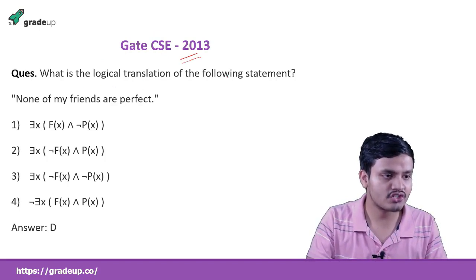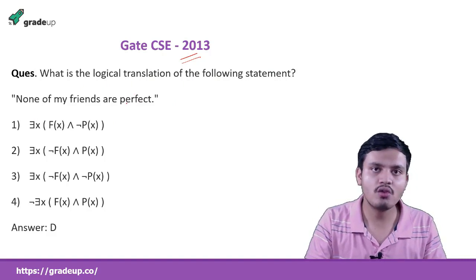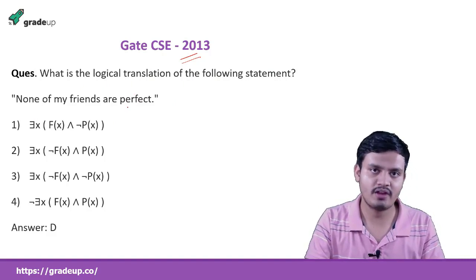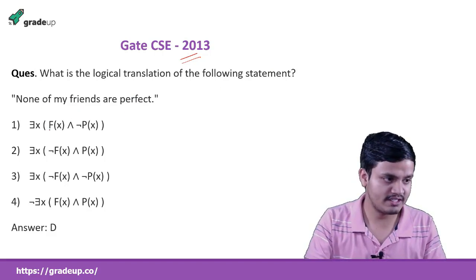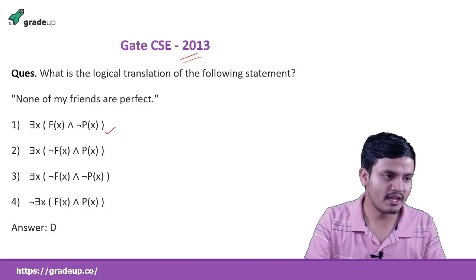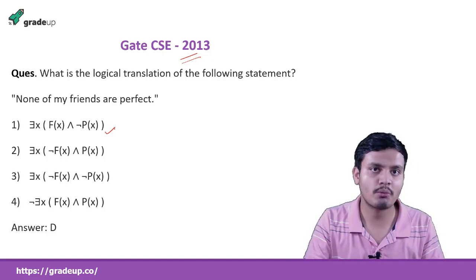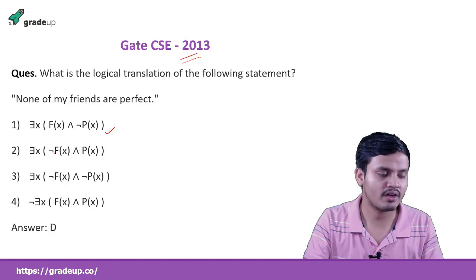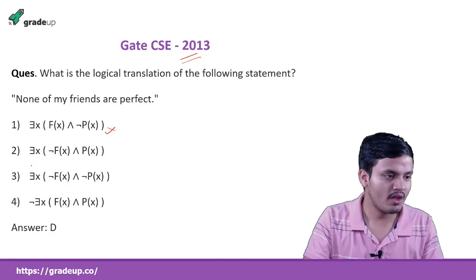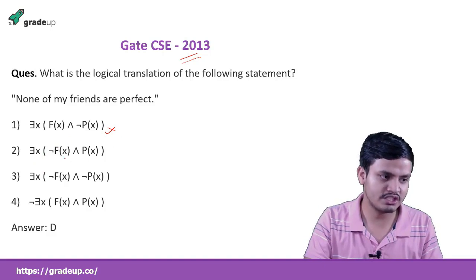What is the logical translation of the following statement: 'none of my friends are perfect'? Option A says there exists an X such that X is my friend and X is not perfect — but the sentence says none of your friends is perfect, so that is wrong. Option B says there exists an X such that X is not a friend of yours — that is also wrong because it should be your friend.